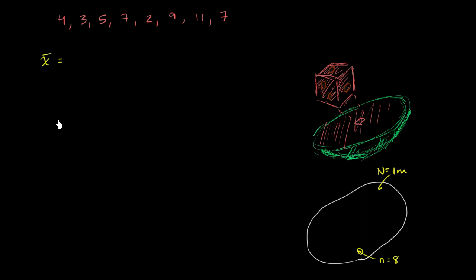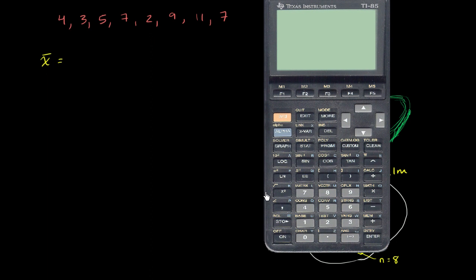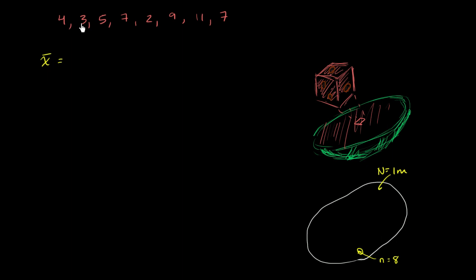So what is the sample mean going to be? Well, all we have to do is add up these points, add up these measurements, and then divide by the number of measurements we have. So 4 plus 3 is 7, 7 plus 5 is 12, 12 plus 7 is 19, 19 plus 2 is 21, plus 9 is 30, plus 11 is 41, plus 7 is 48. So I'm going to get 48 over 8 data points. 48 divided by 8 is equal to 6. So our sample mean is 6.